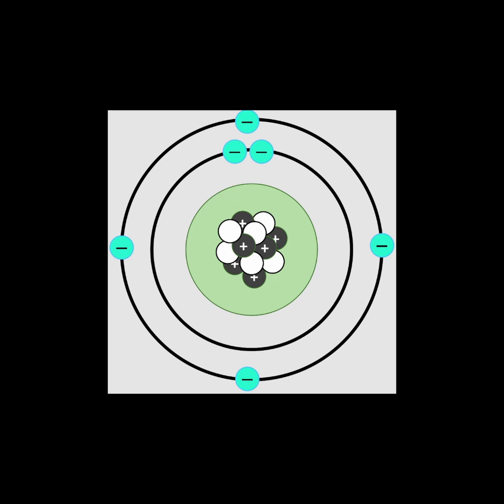The energy levels of an atom are filled up from the lowest energy levels upward to the higher energy levels. Each subsequent energy level requires more energy for pairs of electrons to be able to occupy it.